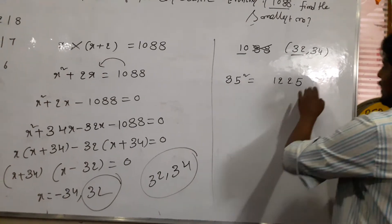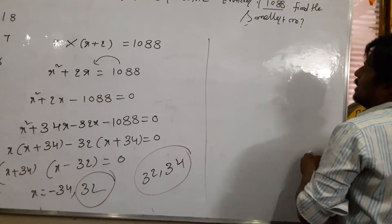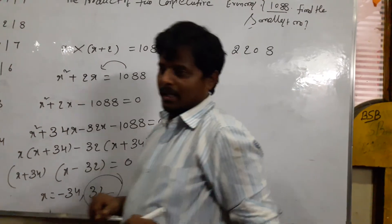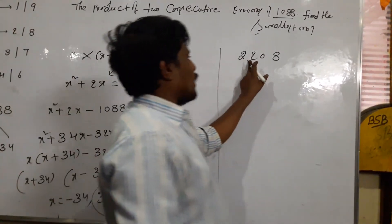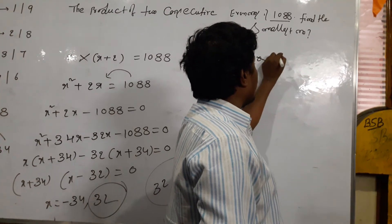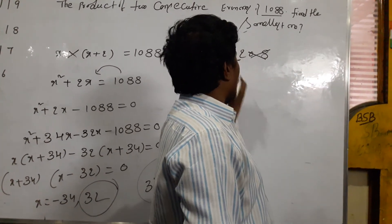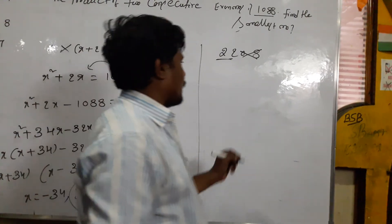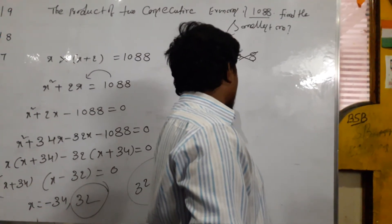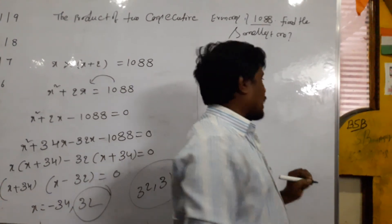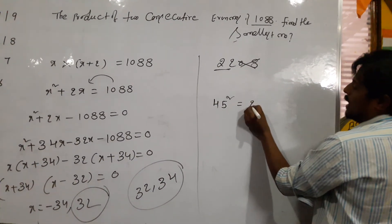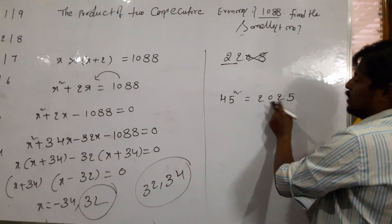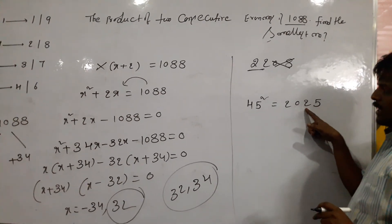For another example: the product of 2 consecutive even numbers is 2,025. We need to use the equation. The square root of 2,025 gives us approximately 45. So we check: 4 squared is 16, 5 squared is 25, 45 squared is 2,025. That means 2,025 is a perfect square, equal to 45 squared.